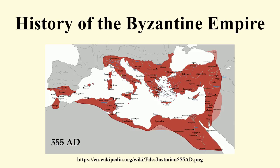By the mid-550s, Justinian had won victories in most theatres of operation, with the notable exception of the Balkans, which were subjected to repeated incursions from the Slavs. In 559, the empire faced a great invasion of Kutrigurs and Sklaveni. Justinian called Belisarius out of retirement, but once the immediate danger was over, the emperor took charge himself. The news that Justinian was reinforcing his Danube fleet made the Kutrigurs anxious, and they agreed to a treaty which gave them a subsidy and safe passage back across the river.